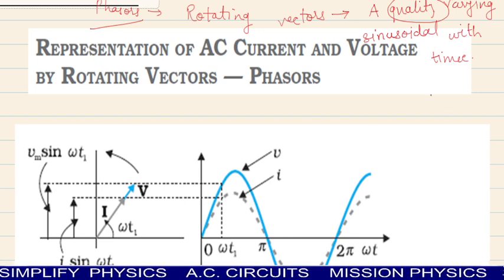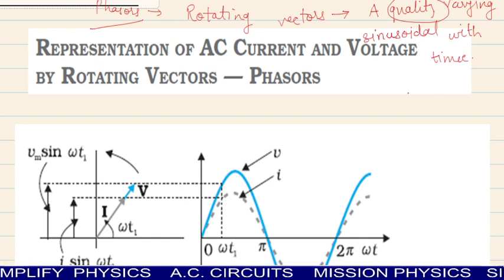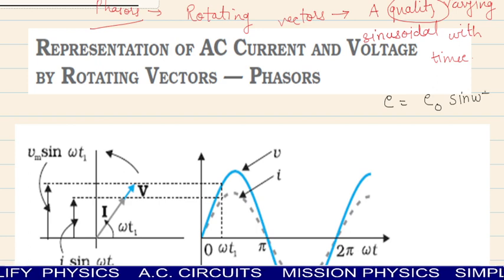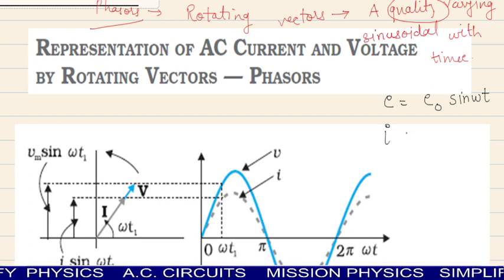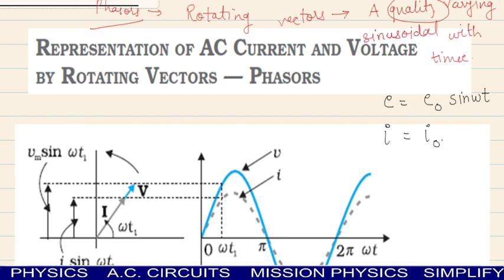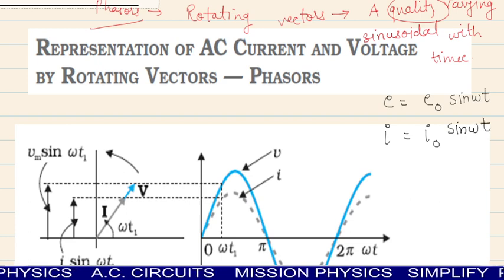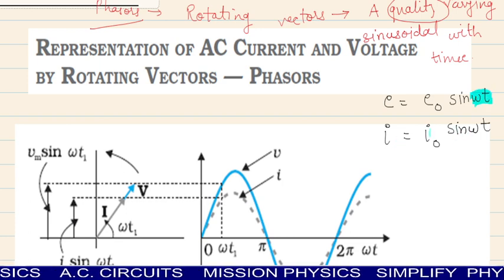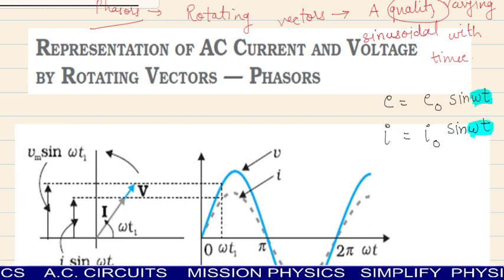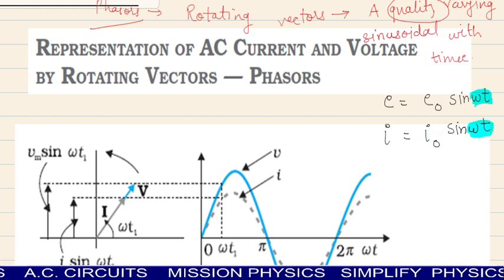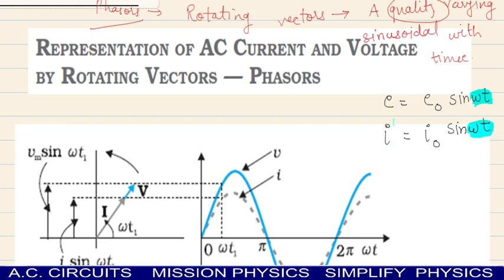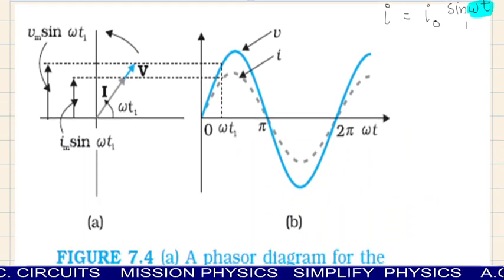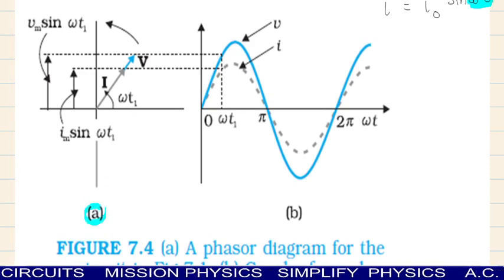As in the previous lecture, we studied the AC circuit containing only resistance — the purely resistive circuit. In that, we saw that E is equal to E0 sin omega t, that is the magnitude of instantaneous EMF. And the magnitude of instantaneous current was I equal to I0 sin omega t. So agar hum log isi ko graph se represent karein, we may look at the first graph — figure number A.